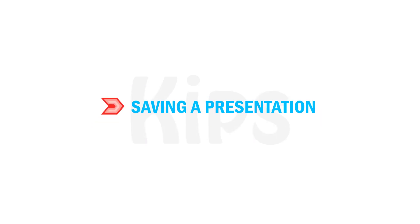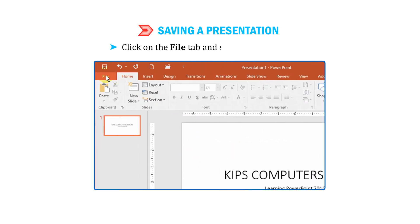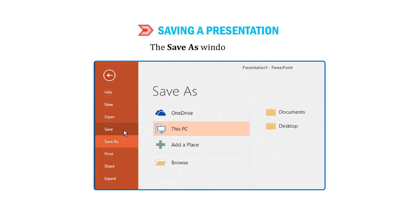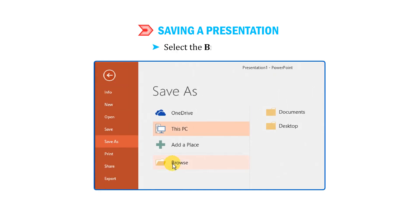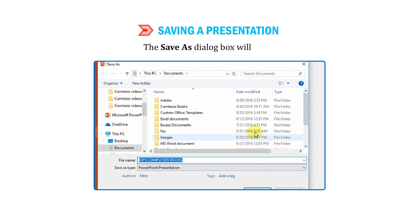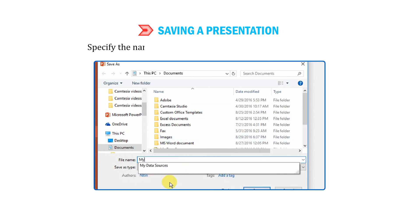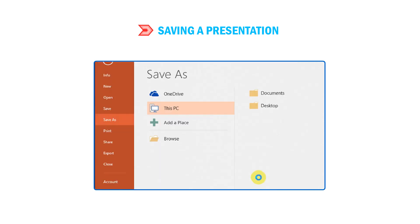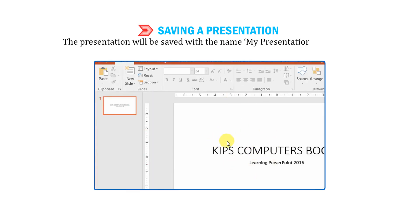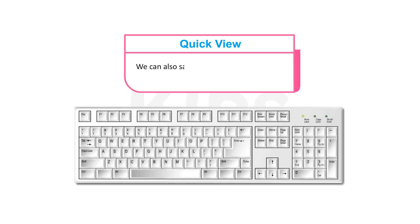Let us learn how to save a presentation. To save the presentation, click on the File tab and select the Save option. The Save As window appears. Or click on the Save button on the Quick Access toolbar. Select the Browse option. The Save As dialog box will open. Select the location where you want to save the file. Specify the name, 'My Presentation', in the File Name text box. Click on the Save button. The presentation will be saved with the name 'My Presentation' having an extension .pptx. We can also save our presentation using the Ctrl plus S key combination.